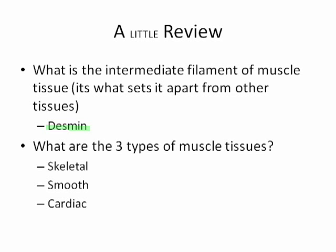We can identify three specific types of muscle, which we went over in our discussion on tissues. We have skeletal muscle, which is voluntary, multinucleated, and has very long muscle fibers. We have smooth muscle, which is uninucleated, fusiform in shape, and involuntary. And we also have cardiac muscle, which like skeletal muscle is striated, but like smooth muscle is also involuntary, with a very branched appearance.